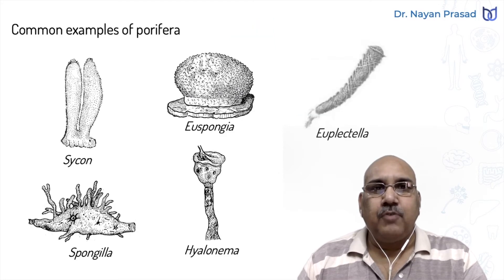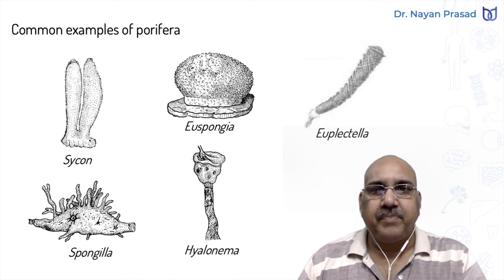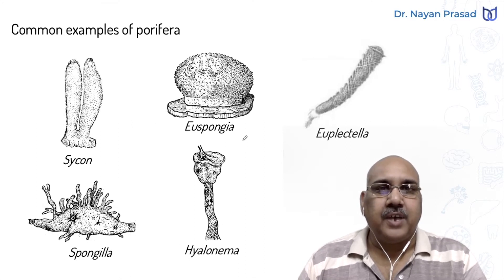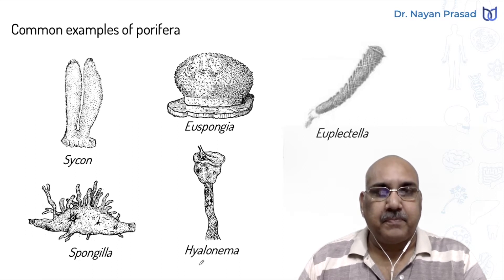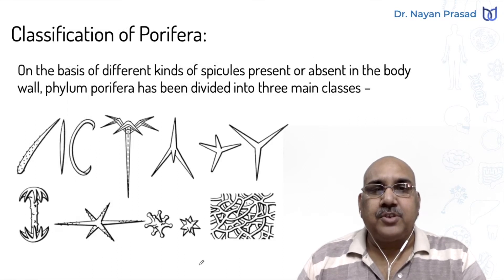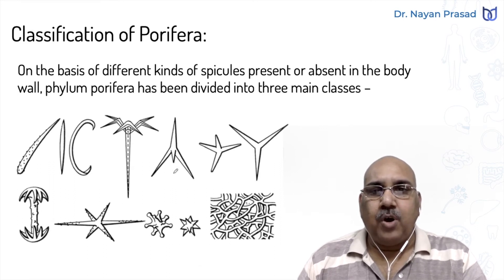Remember Phylum Porifera, the group of pore-bearing animals, also called sponges, includes Sycon, Euspongia, the Bath Sponge, Euplectella, Spongilla, and Hyalonema-like members. This group has been divided into different classes on the basis of presence or absence of different spicules.